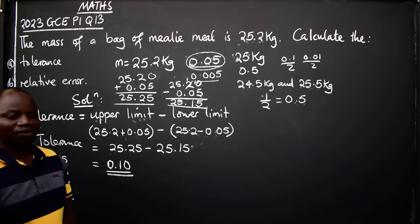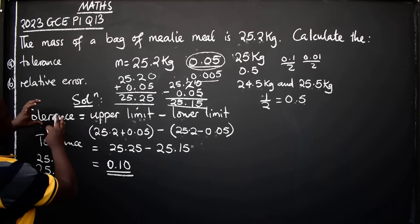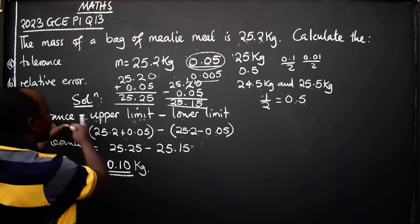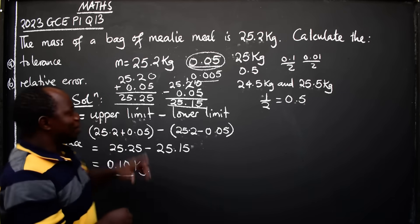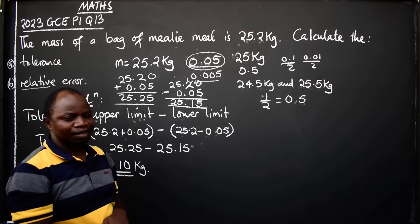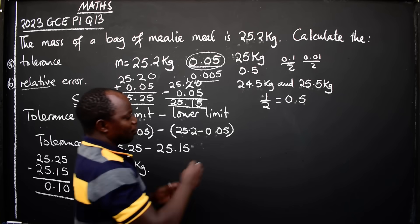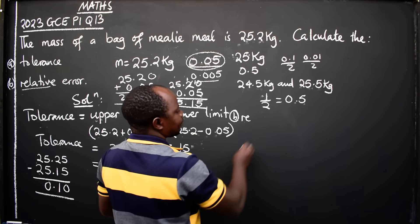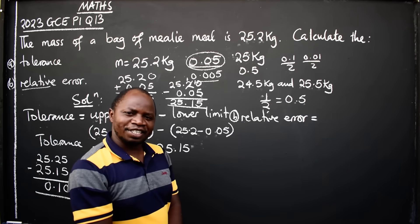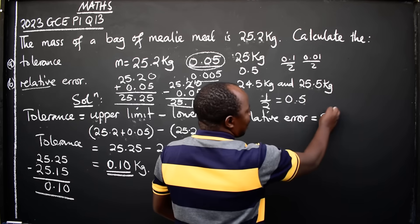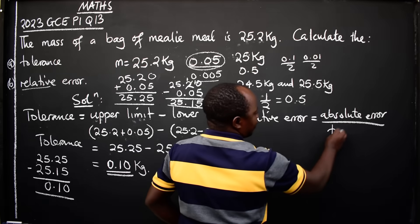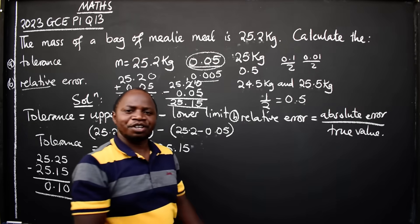So my final answer is 0.10 kg — that is my tolerance. I hope we are together on how to get that. We move on to the next part: relative error. The formula for relative error is: absolute error divided by true value.